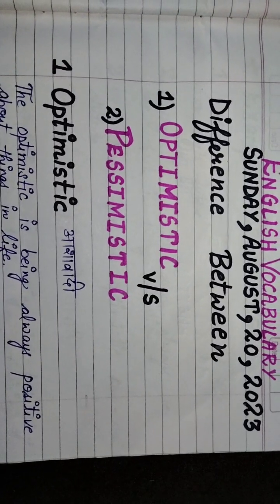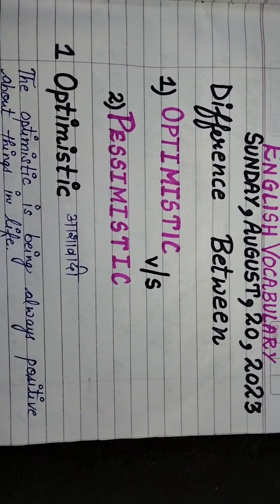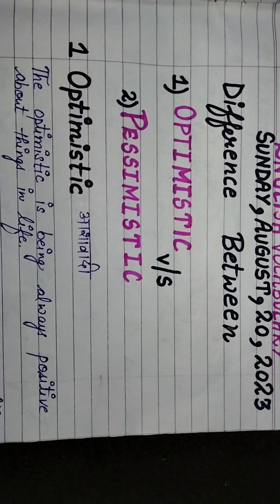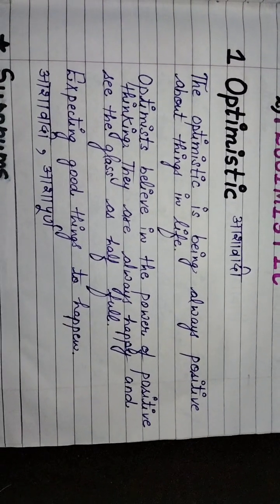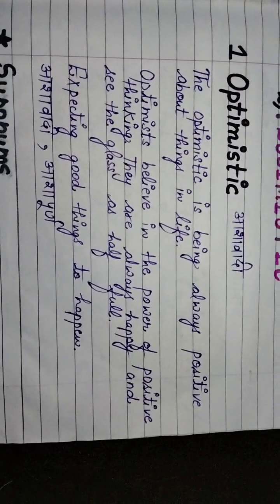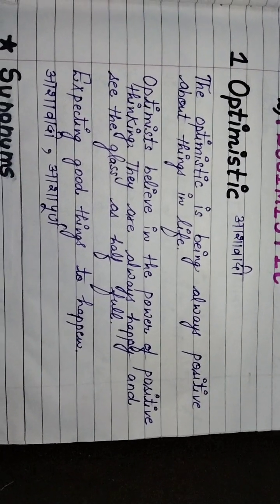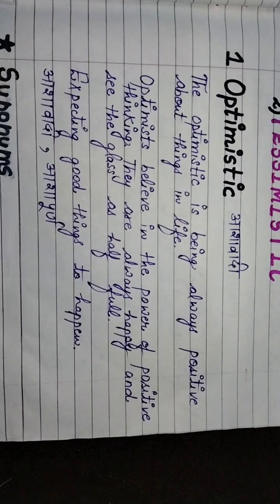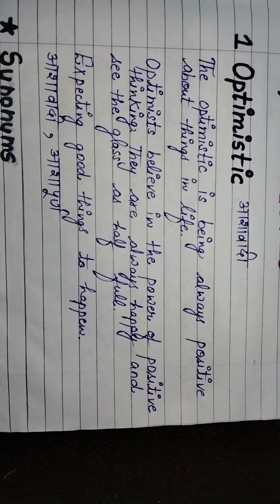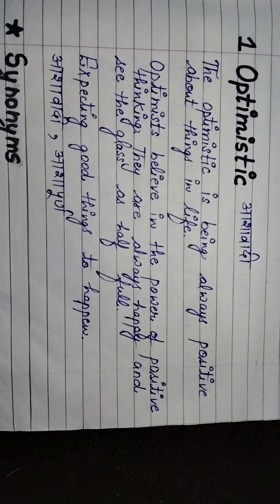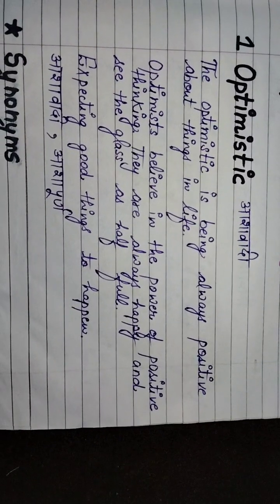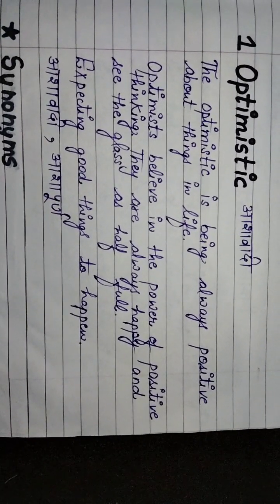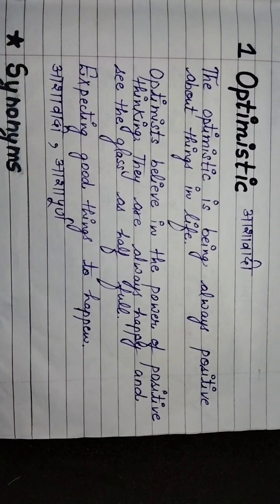Optimistic and pessimistic — today we will learn the difference between these two words and what kind of word is used. Let's start with optimistic. Optimistic means a person who is always positive in every situation — आशावादी रहता है. The optimistic is being always positive about things in life. Optimists believe in the power of positive thinking. They are always happy and see the glass as half full, expecting good things to happen.